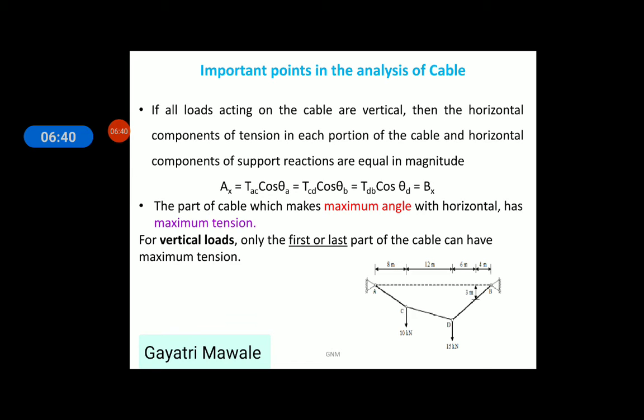If all loads acting on the cable are vertical then the horizontal component of tension in each part of the cable and also the horizontal component of support reactions are equal in magnitude. It means, horizontal component of reaction at A, that is, AX. X is acting somewhat like this suppose.